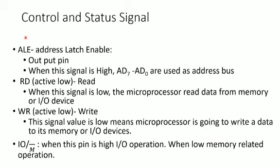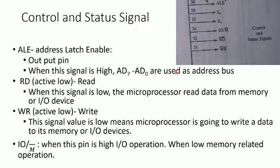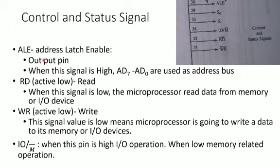The control and status signals include the ALE pin — the Address Latch Enable pin. This is an output pin. When this signal is high, AD0 to AD7 are used as address pins. When ALE is high, the value on AD0–AD7 represents the address.